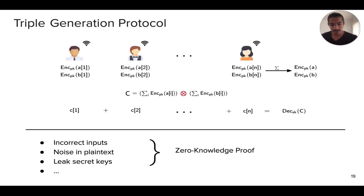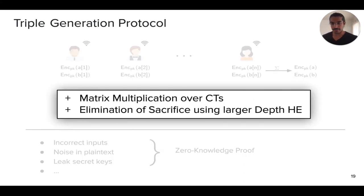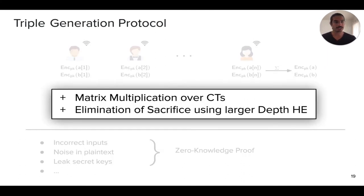The biggest changes are the following. First is doing the matrix multiplication over ciphertext, over arbitrary size matrices. This has some technical challenges, as well as a number of systems improvements. The second important contribution is the elimination of sacrifice by using a larger depth homomorphic encryption scheme. We use a depth two homomorphic encryption scheme. So we can simply do a number of public operations, one after the other, without having to do a distributed decryption or a resharing protocol in between.